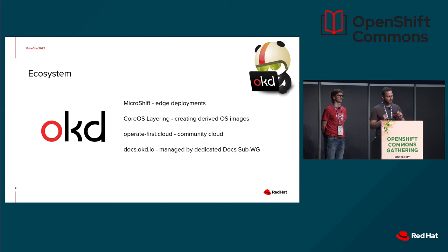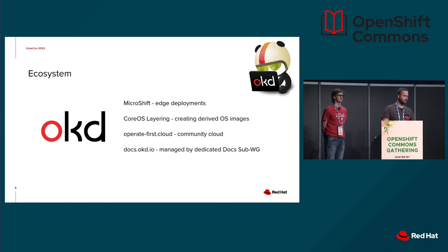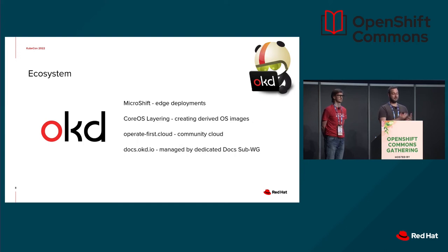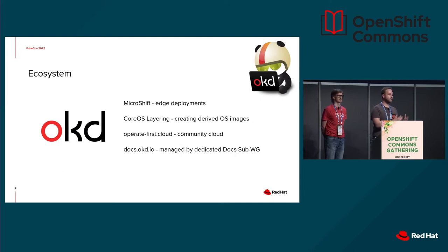The machine OS image — you may or may not know this — we ship the OS as an OCI container image. The machine config operator extracts that OS tree, the directory structure, and writes it to disk, and we reboot into the new version. With CoreOS layering, the container that ships the operating system will be usable just like any other container. Right now we have a special encapsulation where you can't use the machine OS container like a normal container. With CoreOS layering, you can use that OS tree image just as you would use any other container — you can either boot it or run it as a container.